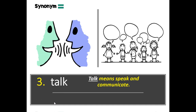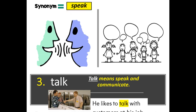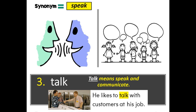He likes to talk with customers at his job. You could also say, he likes to speak with customers at his job. How do I use it? Vanessa likes to talk to her grandpa every Sunday. Or you could say, Vanessa likes to speak to her grandpa every Sunday. How can someone talk to a family member who lives far away?